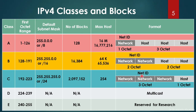In Class C, the first three octets are reserved for the network ID and the last octet is the host portion. Class D ranges from 224 to 239 and is used for multicasting. Class E ranges from 240 to 255 and is reserved for research.